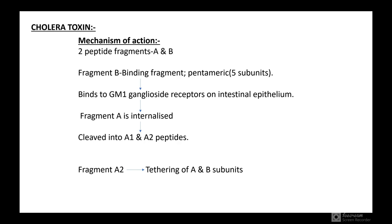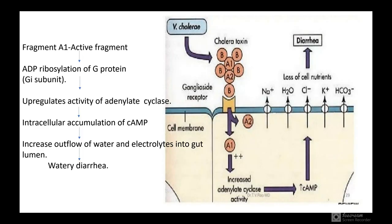Fragment A gets internalized and is cleaved into A1 and A2 peptides. Fragment A2 helps in tethering of the A and B subunits. Fragment A1 is the active fragment, which causes ADP-ribosylation of the G inhibitory protein subunit. This upregulates the activity of adenylate cyclase, leading to intracellular accumulation of cyclic AMP, causing increased outflow of water and electrolytes into the gut lumen resulting in watery diarrhea.